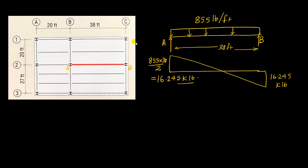This is the load distribution on beam AB. Similarly we can calculate load distribution on beam CD. The only difference is the width of the tributary area. In this case the tributary width is 5 feet on each side, giving a total tributary width of 10 feet. So the uniform load on beam CD is 90 times 10, which equals 900 pounds per foot.